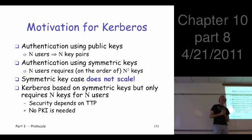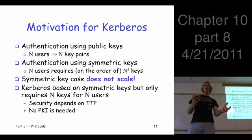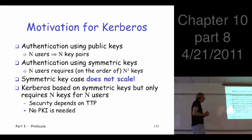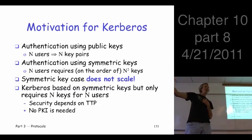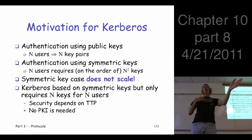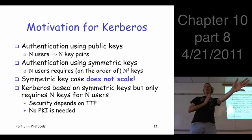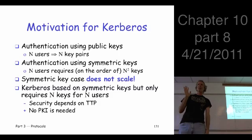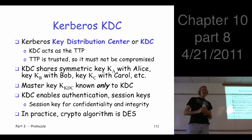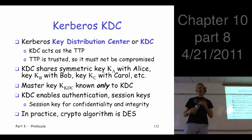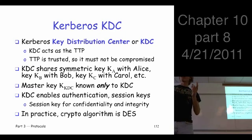Kerberos uses symmetric keys, so how do they get around the scaling problem? That's the trusted third party. Every user shares one key with the trusted third party - that's it. You don't share a key with all the other users. The TTP is the key distribution center, or KDC. The KDC is the TTP.